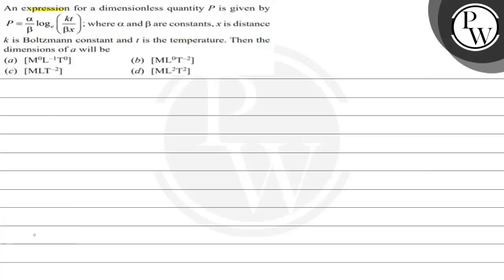Hello, let's read this question. An expression for the dimensionless quantity phi is given by phi equals alpha by beta log of kt by beta x, where alpha and beta are constants, x is the distance, k is Boltzmann constant, and t is the temperature. Then the dimensions of alpha will be...